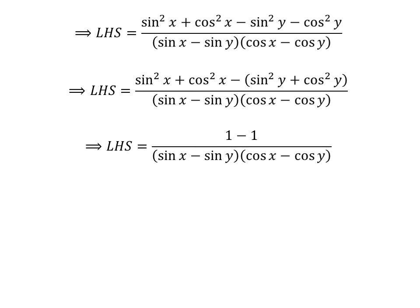Since sine squared of x plus cosine squared of x equals 1, and sine squared of y plus cosine squared of y equals 1, the left hand side simplifies to 1 minus 1 upon sine of x minus sine of y times cosine of x minus cosine of y. Since 1 minus 1 is zero, the left hand side equals zero.